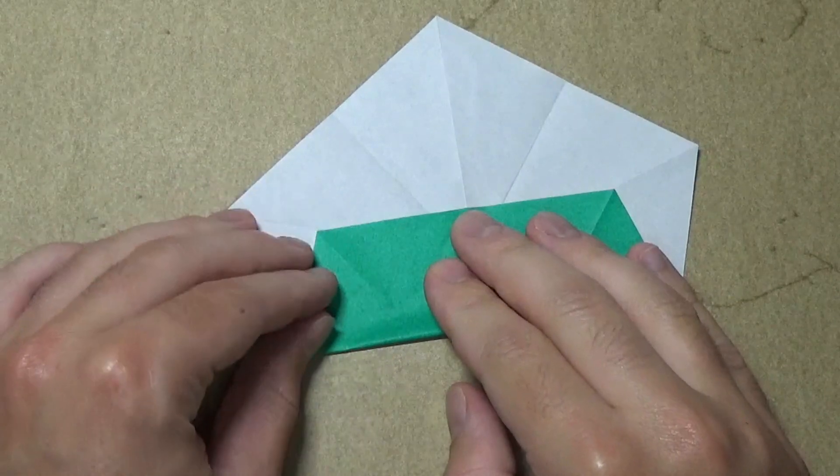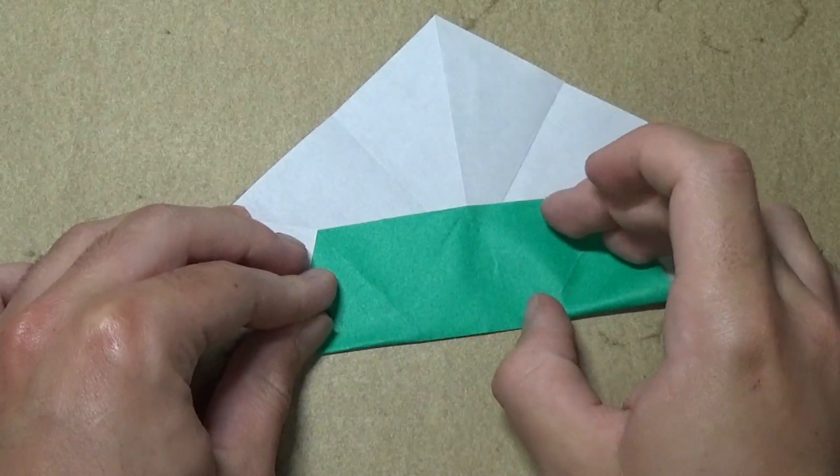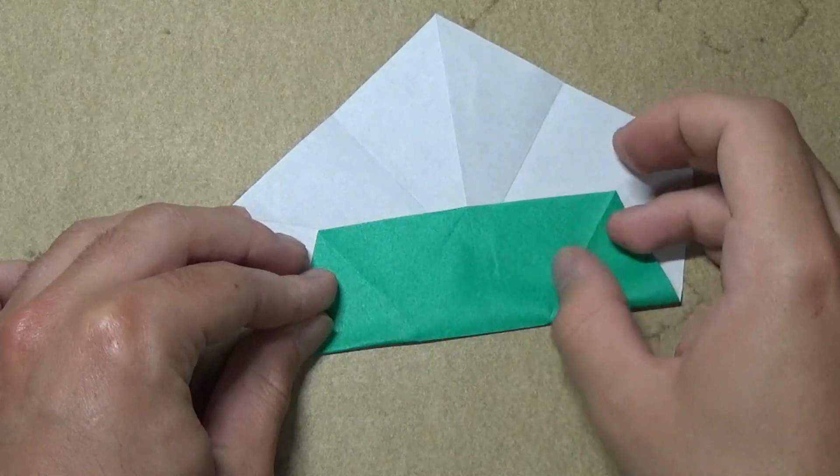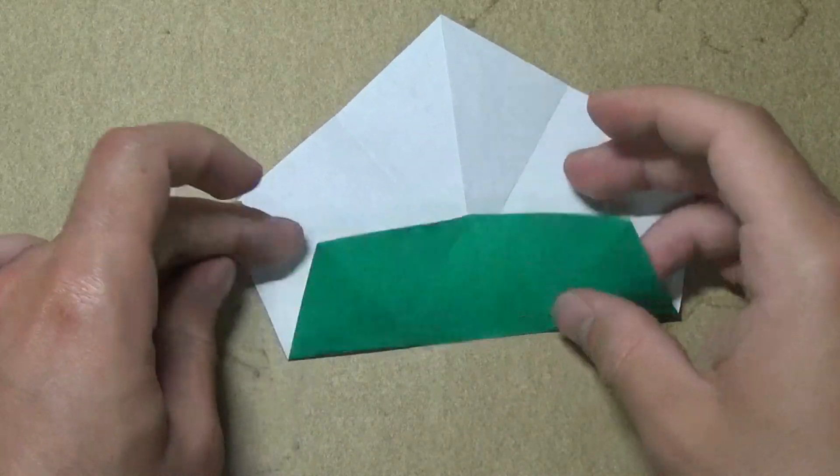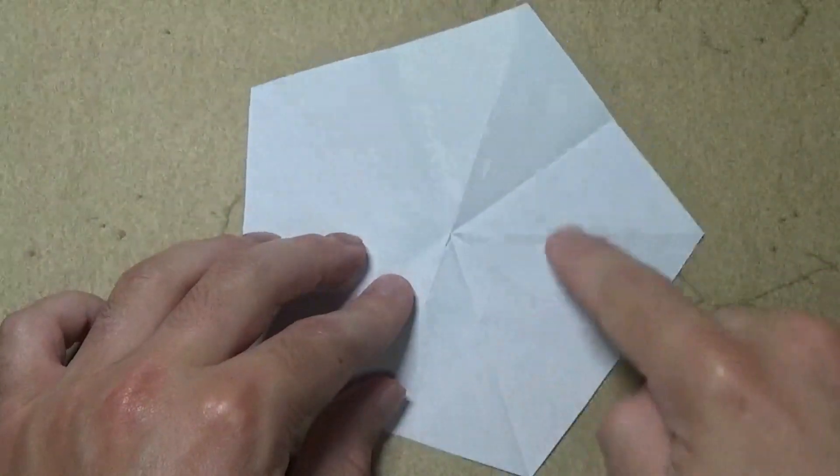And do not fold all the way across, just fold just in between these two creases. Like that. Now repeat that four more times.